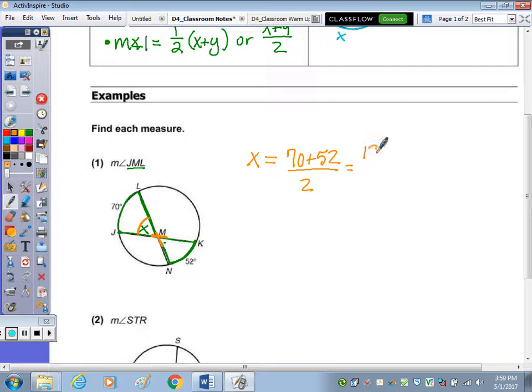So that's 122 divided by 2, we get 21. So the measure of angle JML is 21 degrees.